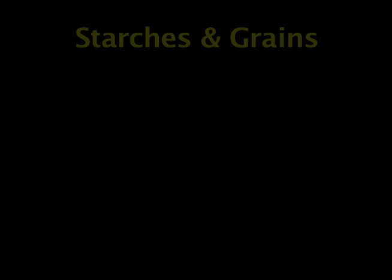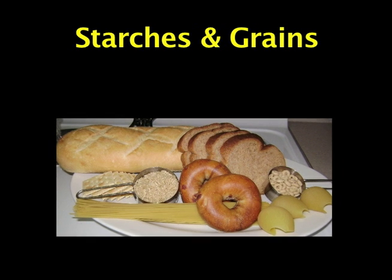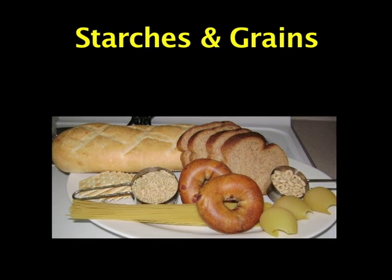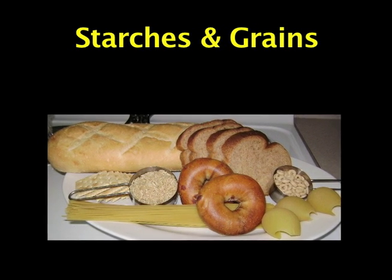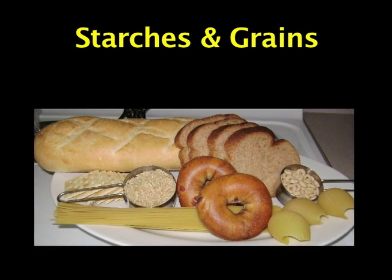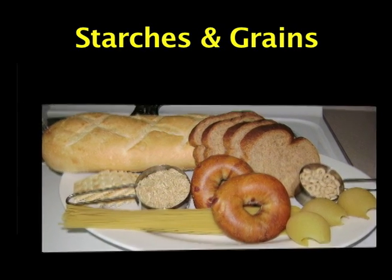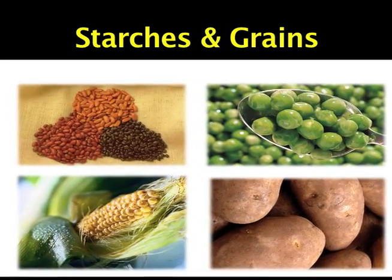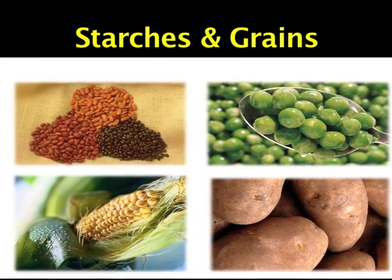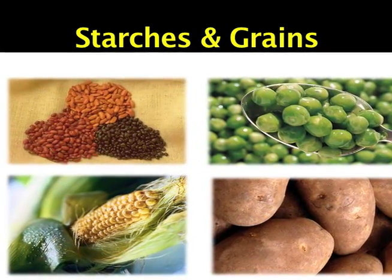The first group is starches and grains. Some foods included in this group are bread, pasta, cereal, crackers, and tortillas. This group also includes starchy vegetables, dry beans, corn, peas, and potatoes.